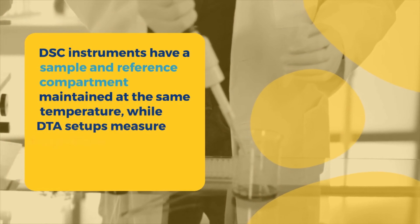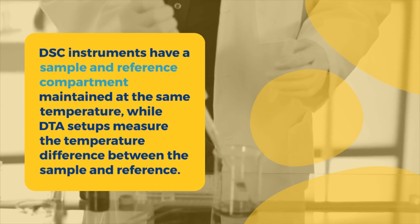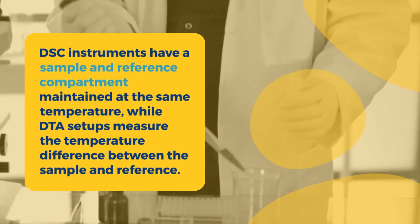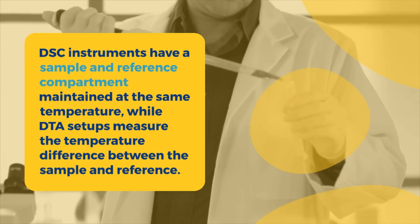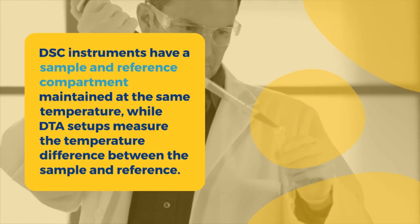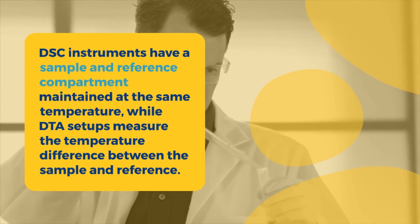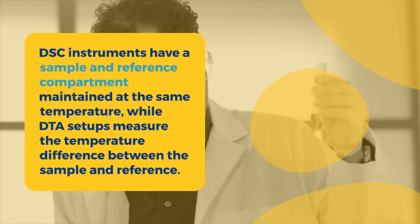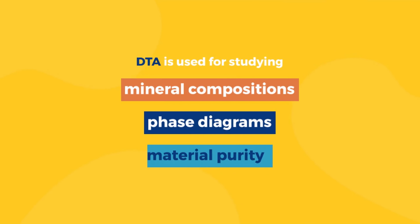DSC instruments consist of a sample and reference compartment, both of which are maintained at the same temperature. Any difference in heat flow between the sample and reference is indicative of thermal events. DTA setups involve a sample and reference material both subjected to identical temperature changes, and the temperature difference between them is measured, revealing thermal transitions.